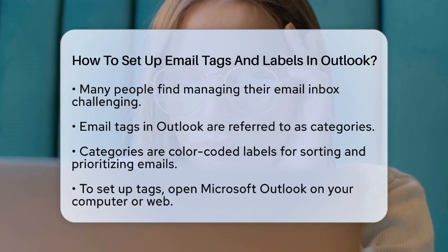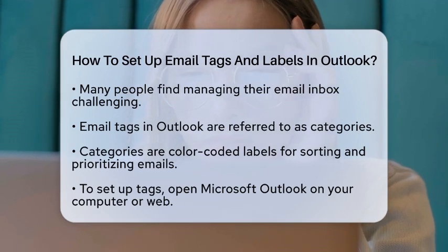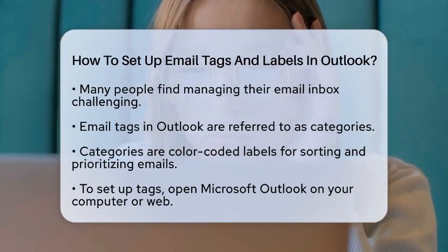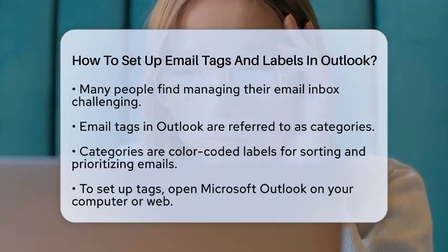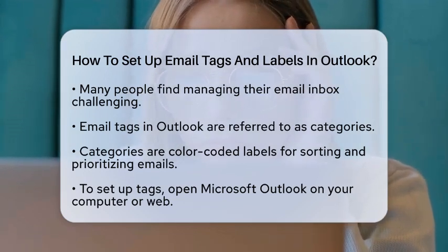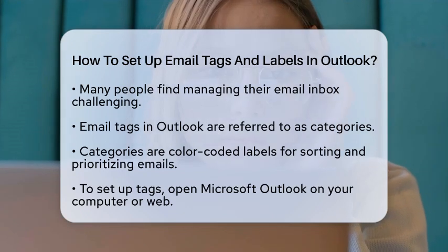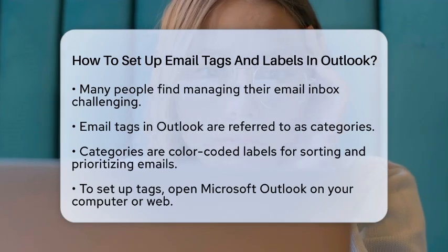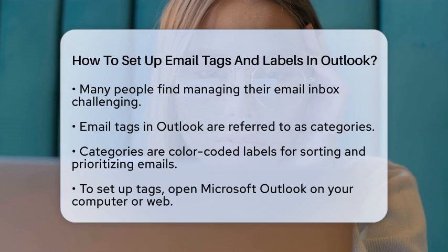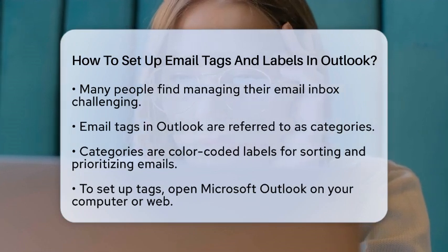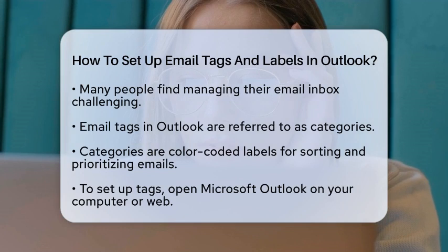First off, in Outlook, email tags are known as categories. These categories are color-coded labels that help you sort and prioritize your emails. By using these tags, you can quickly identify important messages and reduce clutter in your inbox.